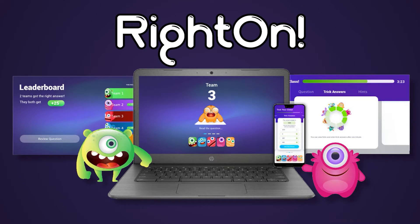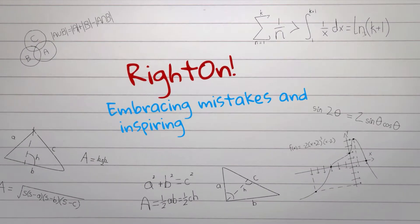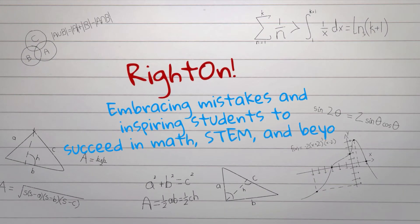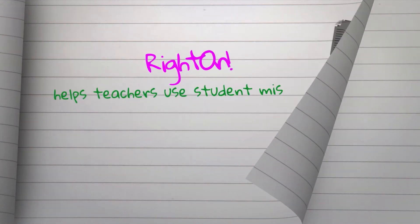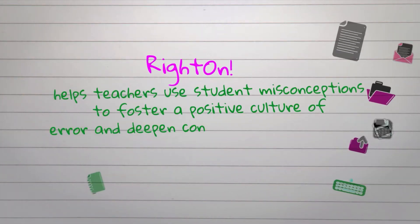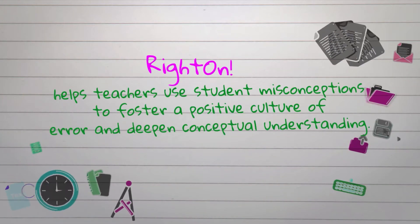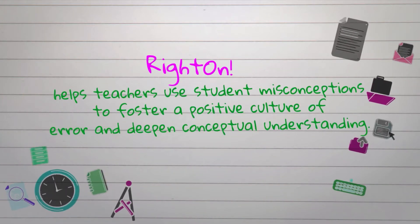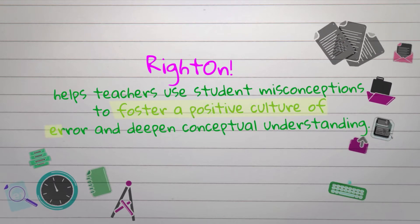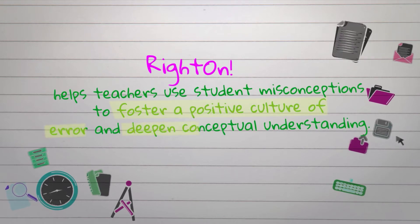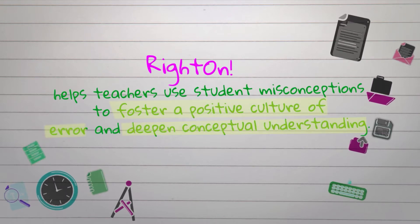Introducing Right On — embracing mistakes and inspiring students to succeed in math, STEM, and beyond. Right On is a transmedia platform that helps teachers use student misconceptions to foster a positive culture of error and deepen conceptual understanding.